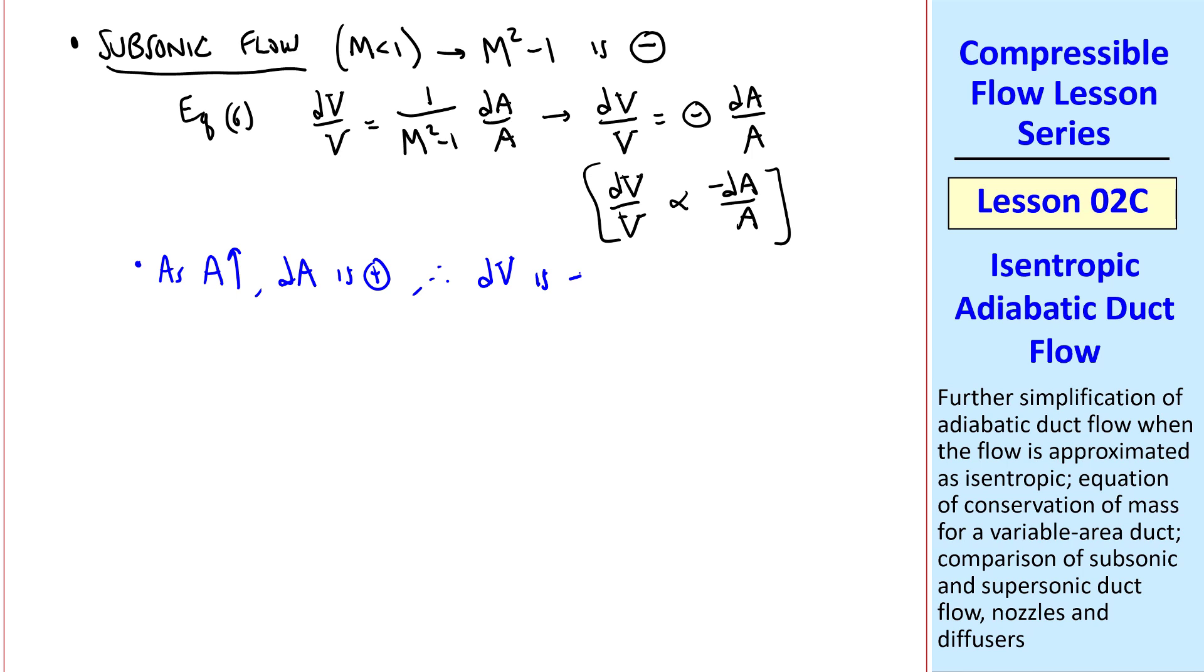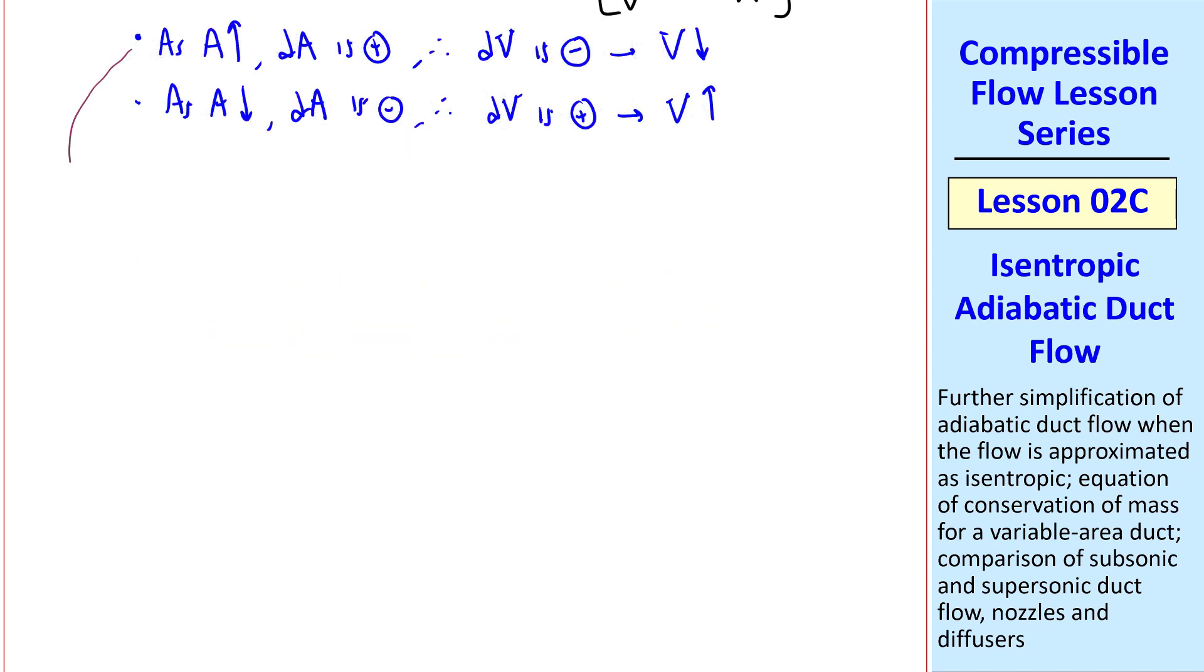Therefore, dV is negative. In other words, V goes down. Similarly, as A goes down, dA is negative, dV is positive, and V goes up. The first case is that of a diverging duct.